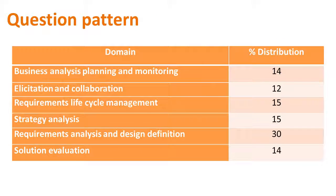The CBAP question pattern is as follows: Business Analysis Planning and Monitoring gets 14%; Elicitation and Collaboration gets 12%; Requirements Lifecycle Management gets 15%; Strategy Analysis gets 15%; Requirements Analysis and Design Definition gets 30%; and Solution Evaluation gets 14%.